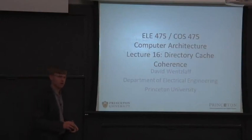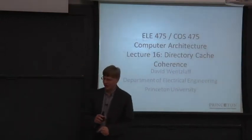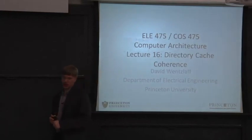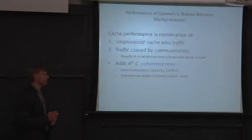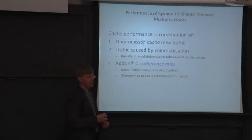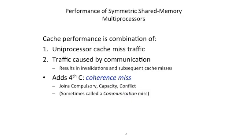We move on to our final topic of ELE 475, which is directory-based cache coherence. As a warm-up, we remember the three Cs of caches: compulsory misses, capacity misses, and conflict misses. We're going to add a new miss type here — a coherence miss.